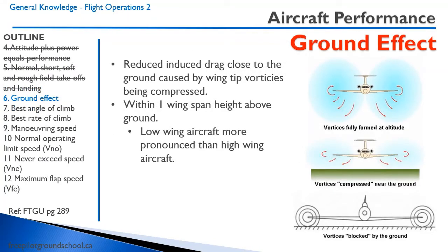Let's talk about ground effect. Wings produce vortices on each wingtip as a byproduct of lift creation — this is called induced drag. These wingtip vortices spin from bottom to top. However, when the aircraft is low to the ground, the vortices are diminished because they get compressed and blocked by the ground, causing a reduction in induced drag. That reduction in induced drag is ground effect — not riding on a cushion of air as commonly explained. Ground effect is more pronounced in low-wing aircraft because the wing is closer to the ground on touchdown.